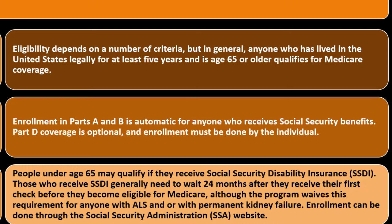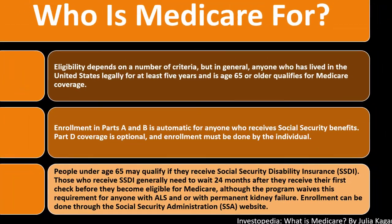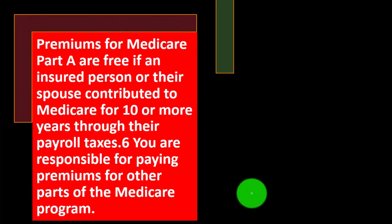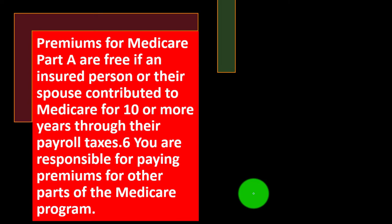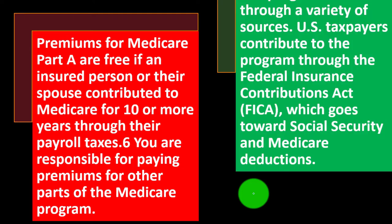Enrollment can be done through the Social Security Administration (SSA) website. Premiums for Medicare Part A are free if an insured person or their spouse contributed to Medicare for 10 or more years through their payroll taxes. You are responsible for paying premiums for other parts of the Medicare program.